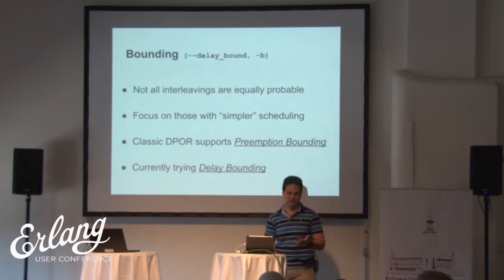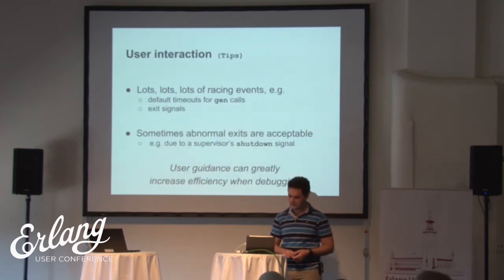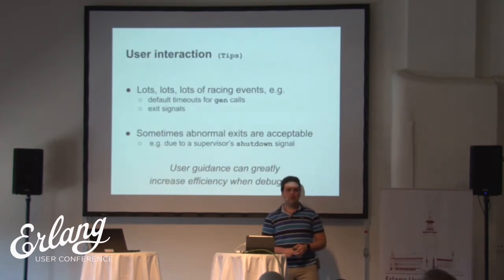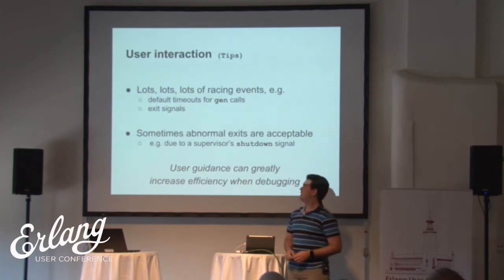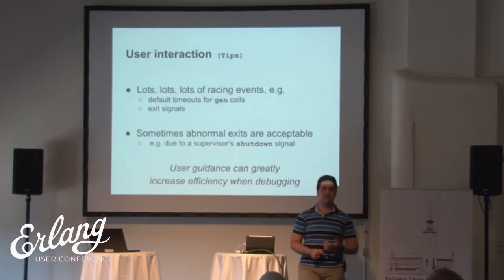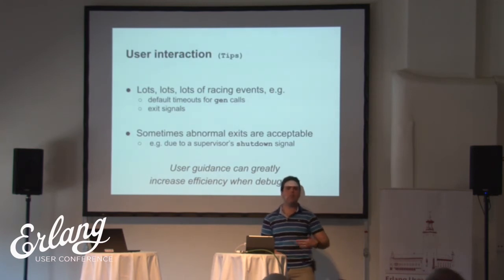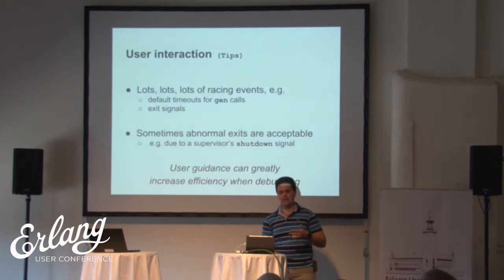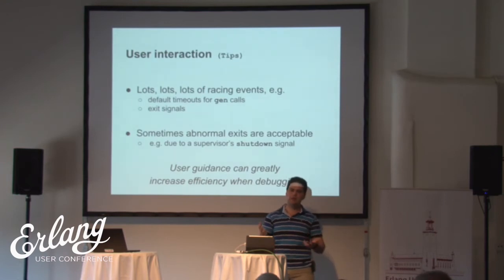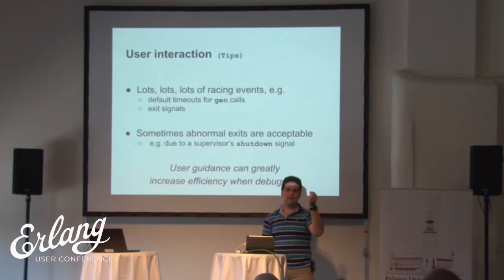Delay bounding breaks optimal dynamic partial order reduction a little bit, but it can let a test of a huge program finish quickly on some of the scheduling. Of course, if you want to verify and be sure that no bugs are there, this bound should be set to infinite. Conqueror is currently giving a lot of tips which might be annoying, because lots and lots of racing events can happen in your program. For example, every call to a GenServer passes through gen, and all these have a default timeout. Conqueror is assuming that all these timeouts might be triggered. Also, exit signals are racing with anything that affects the global state.